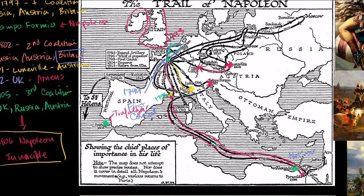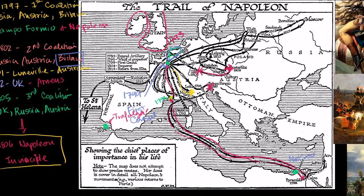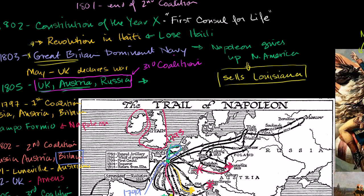France gets significant territory from Austria. Russia is humbled. Germany won't be unified for another 60 or 70 years, but this is a step in that direction — the German nation is escaping the bounds of the Holy Roman Empire. France ends dominant, with the Holy Roman Empire gone and replaced by the Confederation of the Rhine.